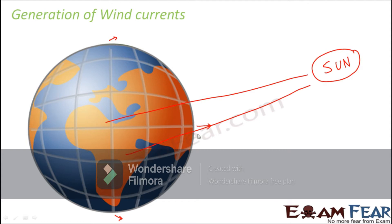Therefore, the air present in the equatorial region gets heated up. When air gets heated up, it expands, becomes lighter, and tends to move upward. So the air from the equatorial region tends to move in the upward direction. Since the earth is also rotating and revolving, basically the air is moving away from the equatorial regions and moving towards the poles.